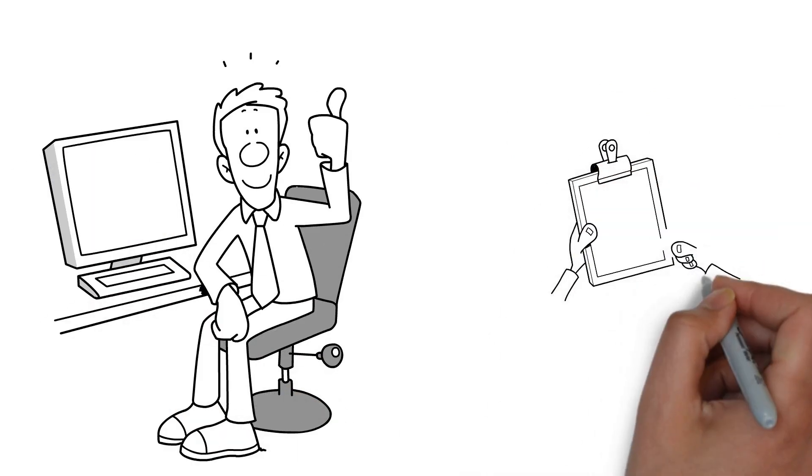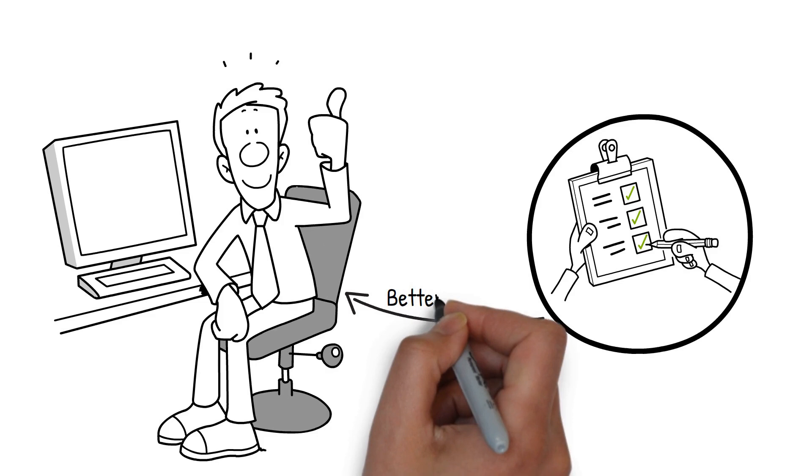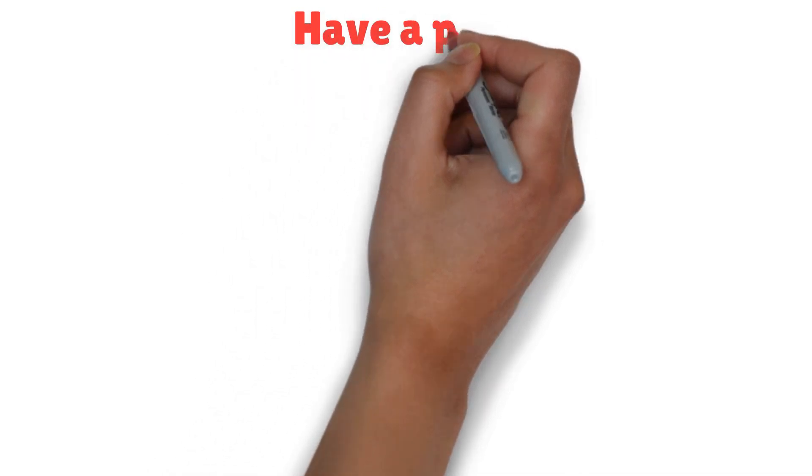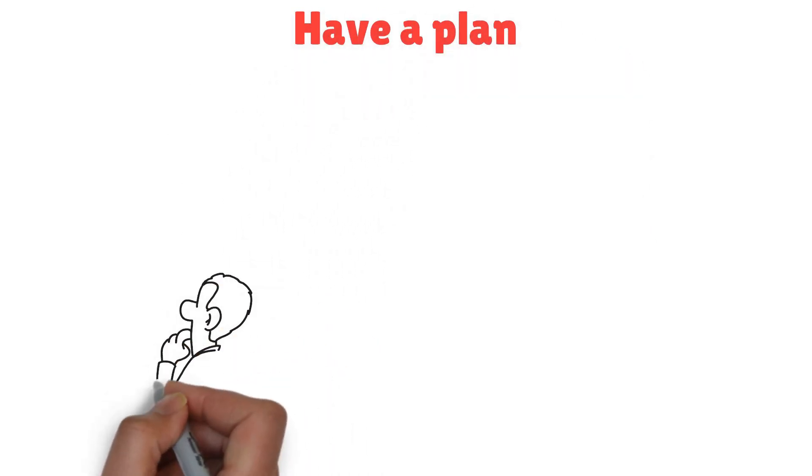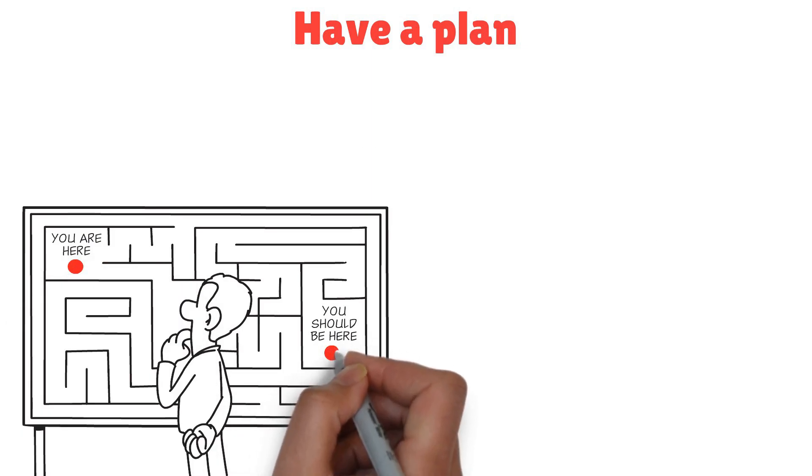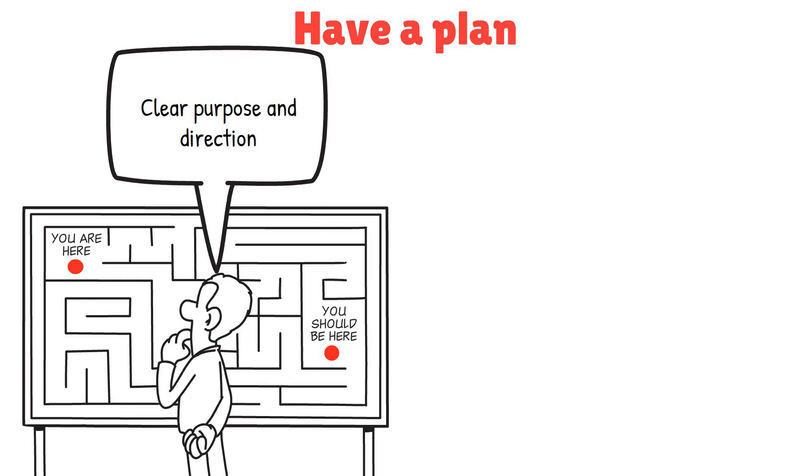Answering these questions honestly will give you a better understanding of what motivates you and your overall disposition toward money. Moving forward, here's the next thing you need to do is to have a plan. Having a plan means knowing what you want your life to be about, and what steps you need to take to make that happen. It's not just about chasing money for the sake of it, it's about having a clear purpose and direction.